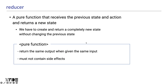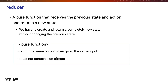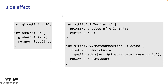Let's take a quick look at reducer. A reducer is a pure function that receives the previous state and an action, and returns a new state. The caveat is that you have to create and return a completely new state without changing the previous state. A pure function must return the same output when given the same input and must not contain side effects. A side effect refers to an effect that is beyond the scope of a function.